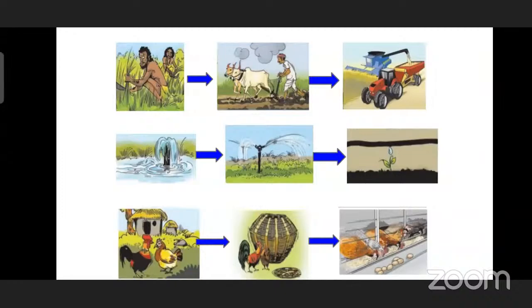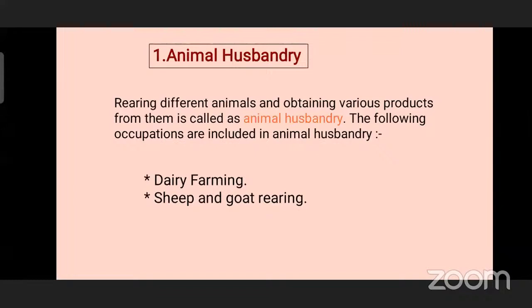Now we will see which activities are included in agriculture. First is animal husbandry. What is animal husbandry? Rearing different animals and obtaining various products from them is called animal husbandry. The occupations included in animal husbandry are: first, dairy farming, and second, sheep and goat rearing. Now we will see about dairy farming in the next slide.